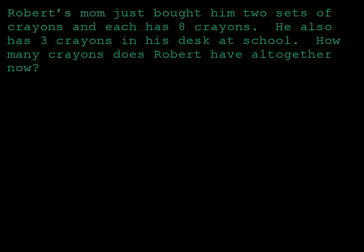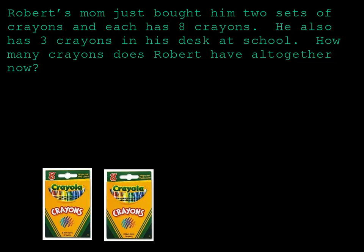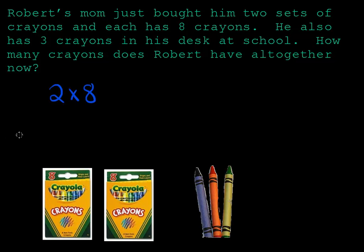Well, let's take a look at the first sentence: his mom bought two sets of crayons and each has eight crayons. Here you can see the two boxes of crayons, and I'll write this as a multiplication problem. There are two boxes and each one has eight. That means I have to multiply because it's the same number of crayons in each box. So two groups of eight crayons.